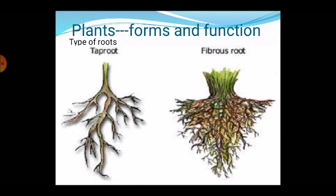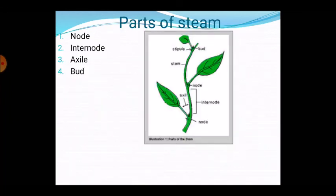Next, parts of stem. There are different parts of stem: node, internode, axle, and bud. First, node: it is a point on the stem from which a leaf arises. Internode: the portion of the stem between two consecutive nodes is called internode. The angle between the stem and the leaf or branch is called axle.